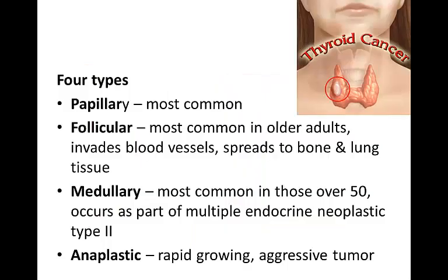There are four types of thyroid cancer. Papillary is the most common, seen in younger women. It is a slow-growing cancer, so the chance for a cure is good with a thyroidectomy. Follicular is the most common in older adults. It invades blood vessels, spreads to bone and lung tissue, and can adhere to the trachea, neck muscles, great vessels, and skin, resulting in dysphagia and dyspnea. A hoarse voice indicates laryngeal involvement.